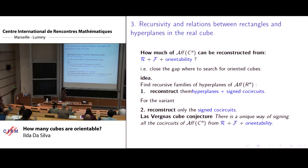Finally, and now I come to a more recent topic or direction, which is looking at again explicitly how much of the real cube can be constructed from the family of signed rectangles, signed co-circuits complementary of the facets and skew facets, just using orientability axioms. The idea to start working with that is to find recursive families of hyperplanes of the real affine cube and try to reconstruct them.